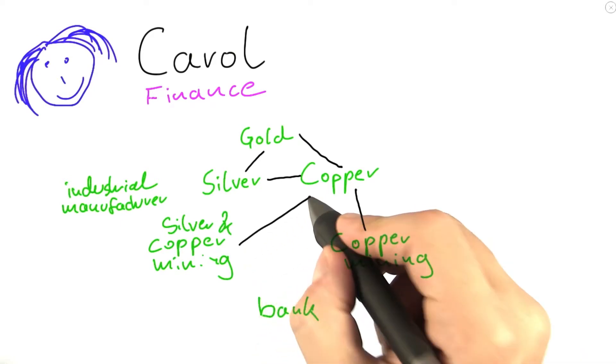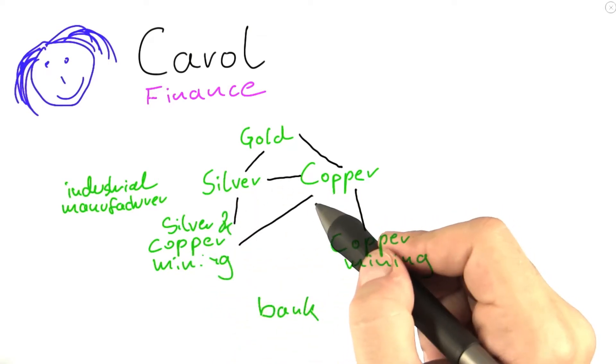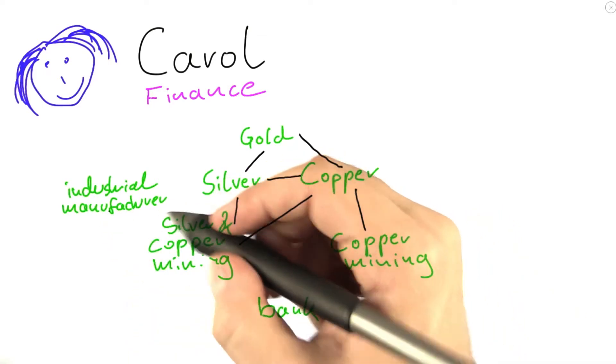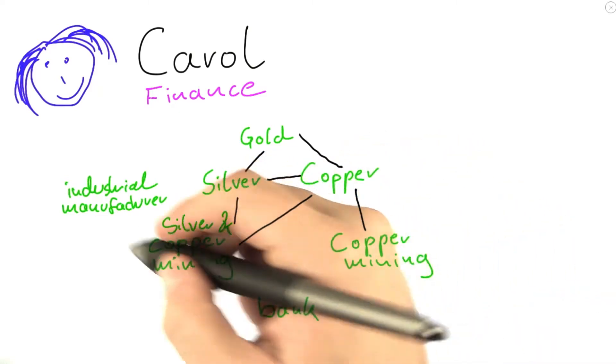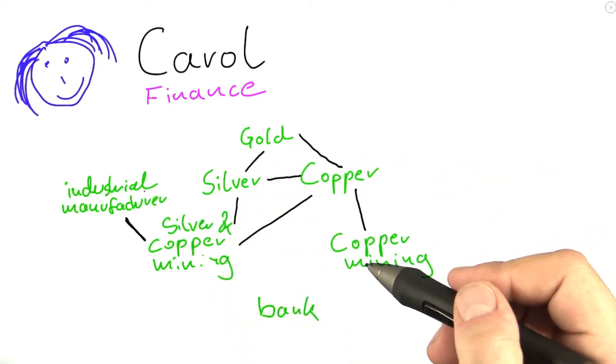Similar here, this is a silver and copper mining, so you either invest in this company or in those precious metals here. If the industrial manufacturer is actually a supplier to this company here, you probably wouldn't want to invest in both of them at the same time.